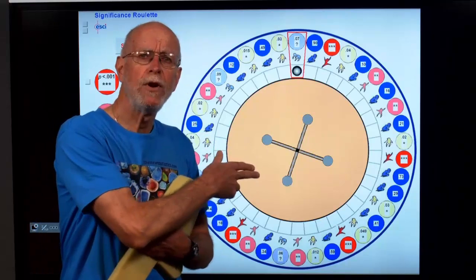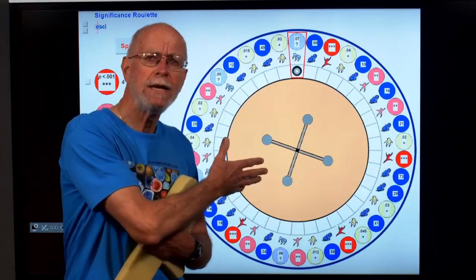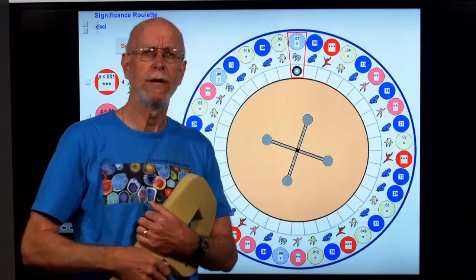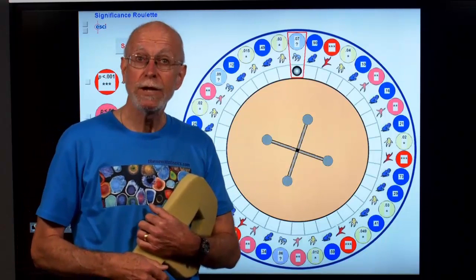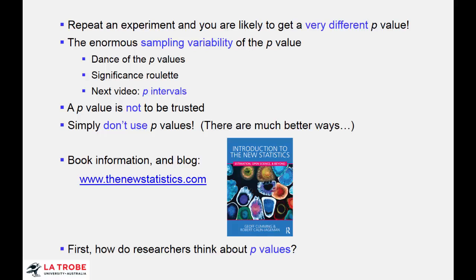Surely that's all a bit of nonsense — a ridiculous party trick that bears no relation to real research. I'll explore that in a moment. But first, here's an outline of what I'd like to do. An astonishing thing is that if you repeat an experiment, you are very likely to get quite a different p-value. In other words, the sampling variability of the p-value is really amazingly large. To illustrate this, I'll play with the dance of the p-values and Significance Roulette.